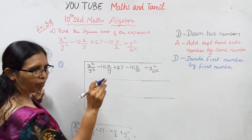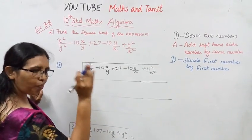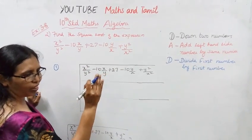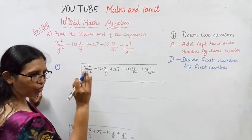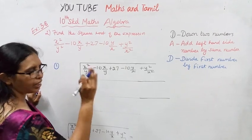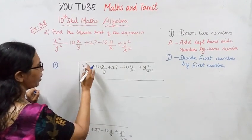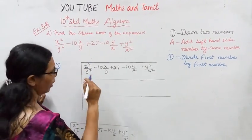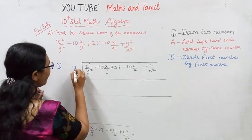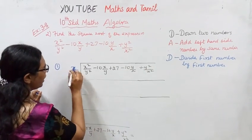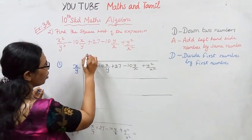X power 4 — that is the same way. X power 4 is the same way, giving x square. X square by 1, then x by y.